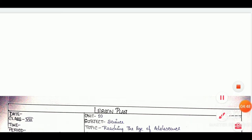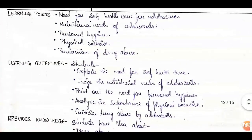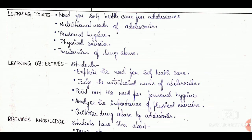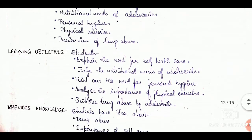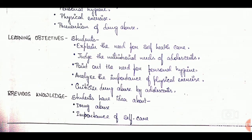After that we have learning points. Learning points are nothing but what the child is going to learn in the class that day — they can be written in statements or in phrases as well. Then come learning objectives. Again, the keywords for learning objectives are taken from Bloom's taxonomy, such as explain, judge, point, analyze, criticize. These are all action verbs taken from Bloom's taxonomy.